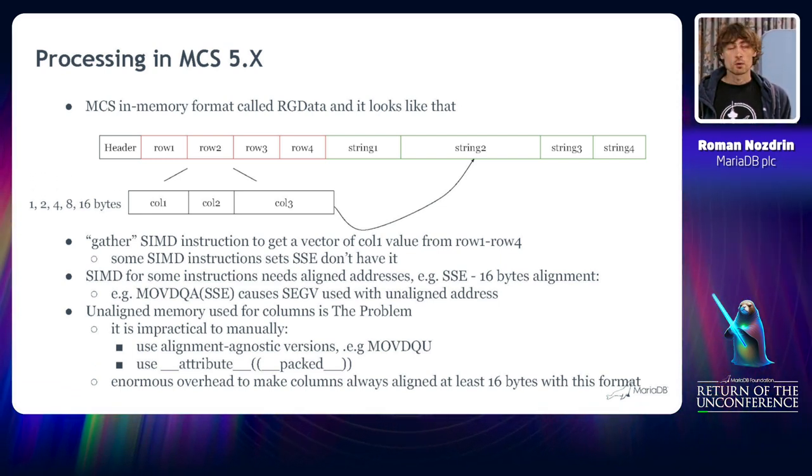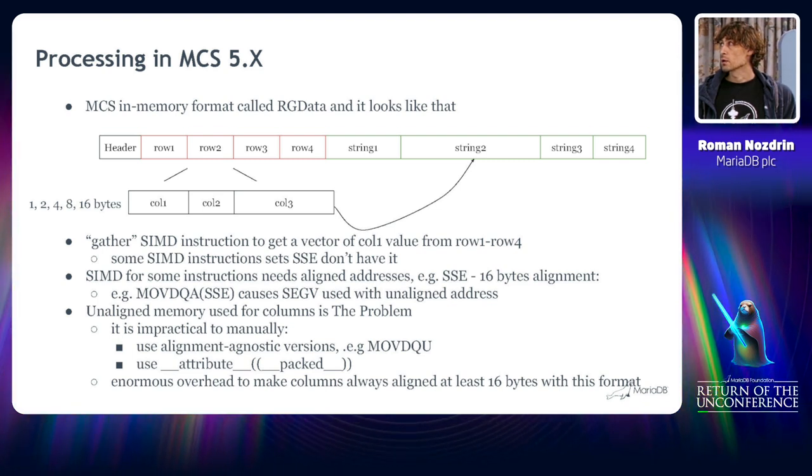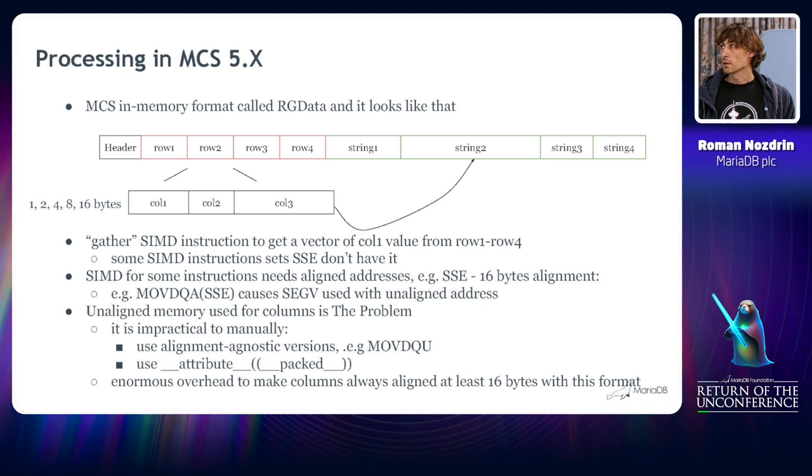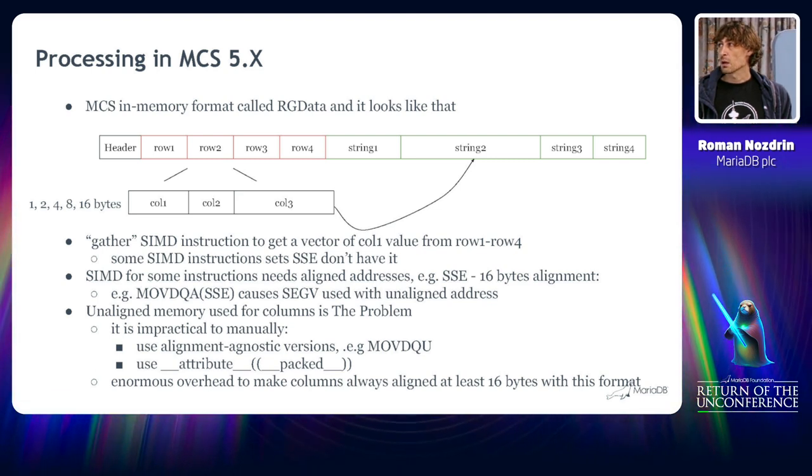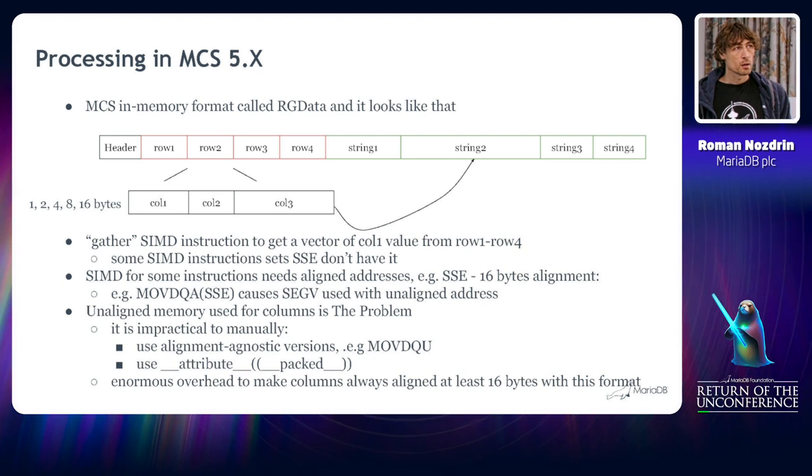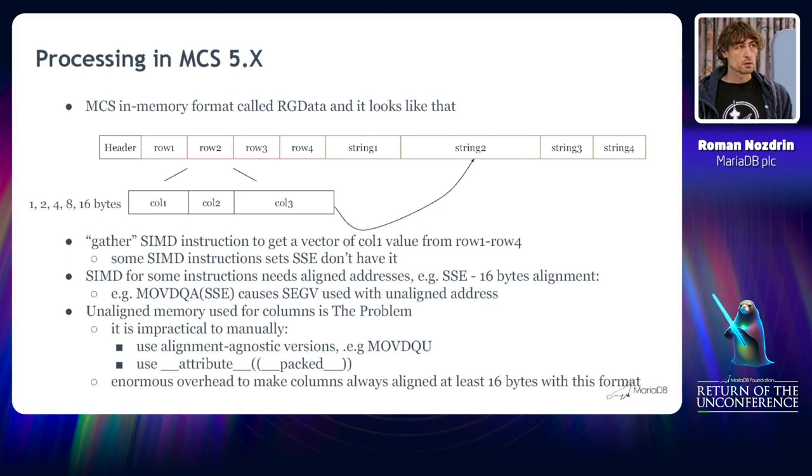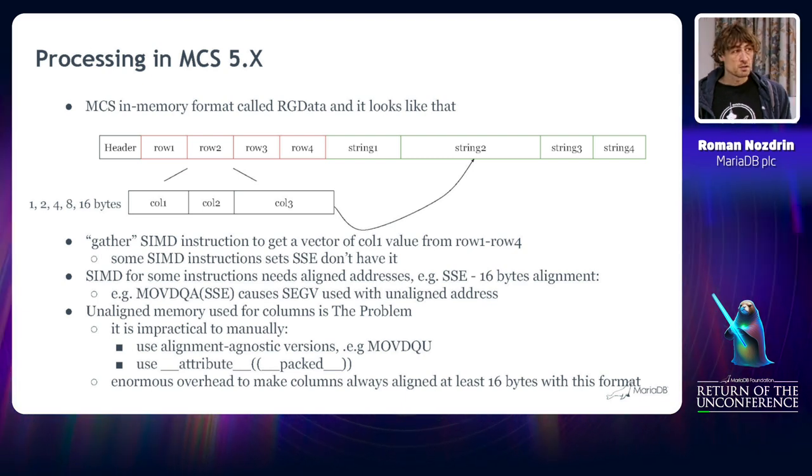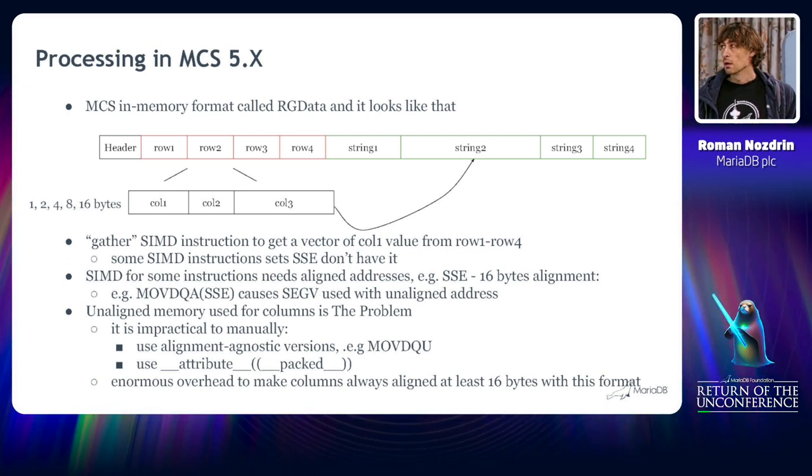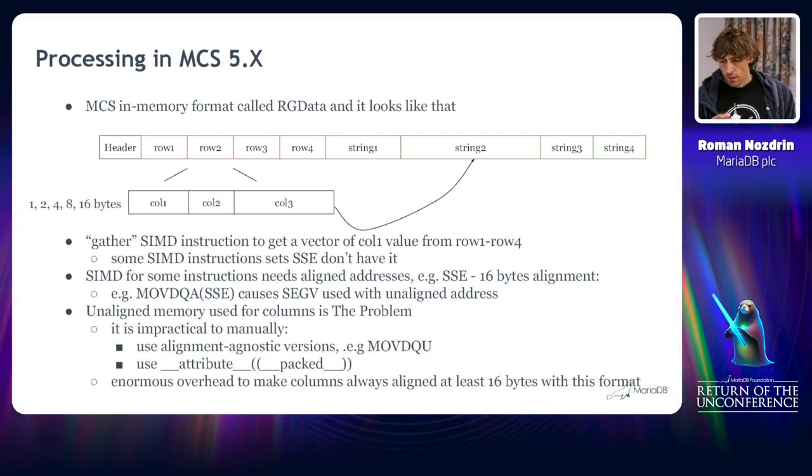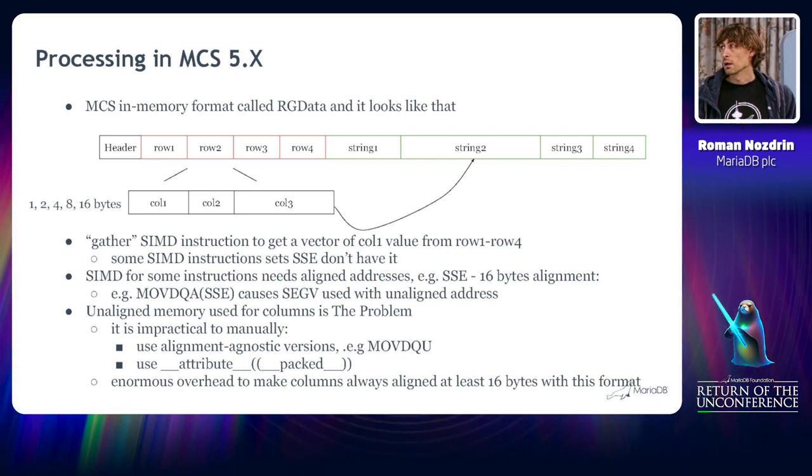To go on I need to share some context with you about the internal representation of data in ColumnStore. And we call it RGData. And the format is pretty straightforward. There is a fixed size header. After that there is an array of rows. We call this part a typed column buffer. And this typed column buffer consists of a number of fixed size columns. And the sizes are power of 2 starting from 1 and end up with 16 bytes. And there is a potential string store buffer where variable size strings belong to. So looking at this format one might ask about how it is suitable for vectorization. And you will be right.